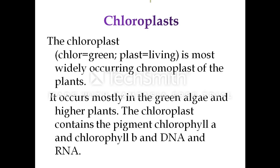The last type of plastid is chloroplast — 'chloro' refers to green, 'plast' means living. Chloroplast is the most widely occurring plastid in plants. As mentioned earlier, leucoplasts and chromoplasts can be converted into chloroplasts by continuous exposure to sunlight and development of pigment. Chloroplasts occur mostly in green algae and higher plants, and contain the pigments chlorophyll A, chlorophyll B, as well as DNA and RNA.